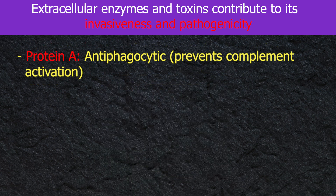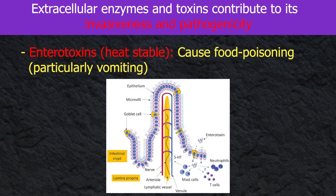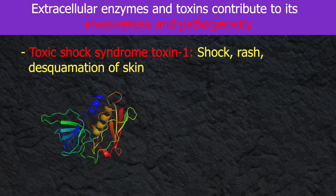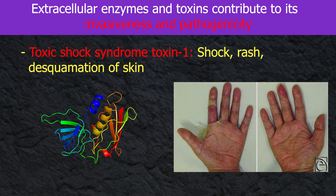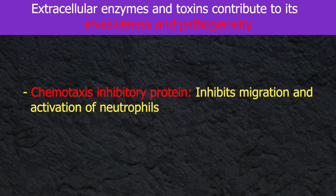Protein A is antiphagocytic and prevents complement activation. Enterotoxins are heat-stable and cause food poisoning, particularly vomiting. Toxic shock syndrome toxin-1 causes shock, rash, and desquamation of the skin. Epidermolytic toxins A and B cause generalized peeling of the skin. Chemotaxis inhibitory protein limits migration and activation of neutrophils.